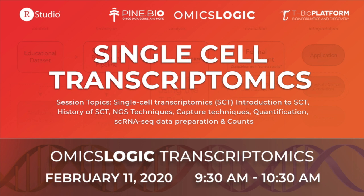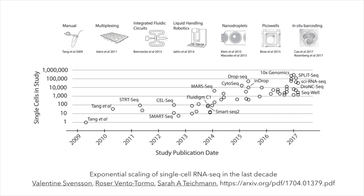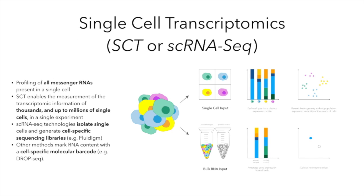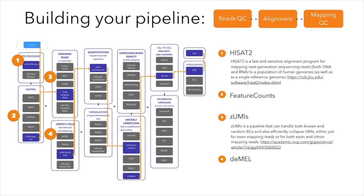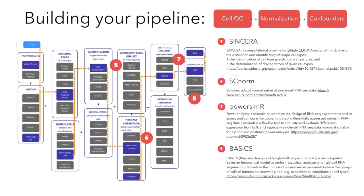Finally, we will conclude the program speaking about single-cell transcriptomics. Emerging since 2009, this is a recent technology that continues to evolve and diversify. Single-cell transcriptomics help identify all messenger RNAs present in a single cell. Unlike bulk RNA-seq profiling, where sequencing libraries are generated from thousands of cells, single-cell RNA-seq technologies isolate single cells and generate cell-specific sequencing libraries, marking RNA content with a cell-specific molecular barcode. This amount of sparse data calls for additional processing steps, including special normalization approaches, filtering, and quality control, because data can be informative but also very noisy.